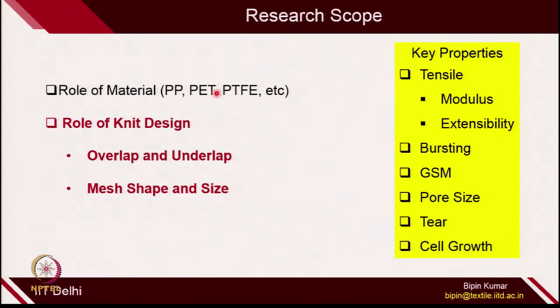The research scope for surgical mesh includes different materials — PP, polyester, poly-tetrafluoroethylene. From the knitting part, you can change the overlap and underlap variation to control mesh shape and size. Key properties to study include tensile modulus, extensibility, strength, bursting properties, GSM, pore size, tear, and cell growth. This is a good opportunity if you are interested in pursuing a career in surgical meshes and medical textiles — you can use the importance of warp knitting in your field.